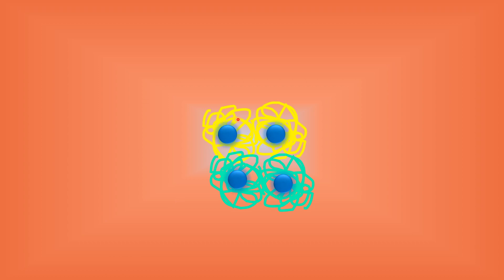Hemoglobin is a tetra-peptide composed of four peptide chains — two alpha chains and two beta chains. The blue circle shown here represents carbon dioxide. In the Haldane effect, we are going to see pictorially in an animated model what the Haldane effect is.